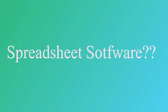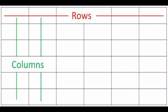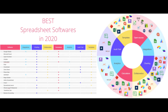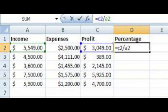Have you ever heard about spreadsheet software? A spreadsheet software is a computer application that is used to analyze and store data in tabular form — that is, in the form of rows and columns. There are several types of spreadsheet software, but Microsoft Excel is the most popular and widely used spreadsheet program. Different organizations or companies use Microsoft Excel to track their profit and loss summary.